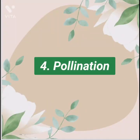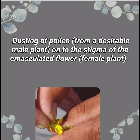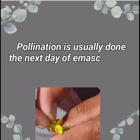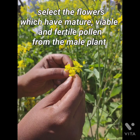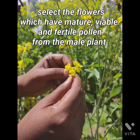Next is pollination. Definition of pollination: it is the dusting of pollen from a desirable male plant onto the stigma of the emasculated flower, that is the female plant. Pollination is usually done the next day of emasculation. For pollen collection, select the flowers which have mature, viable, and fertile pollen from the male plant.